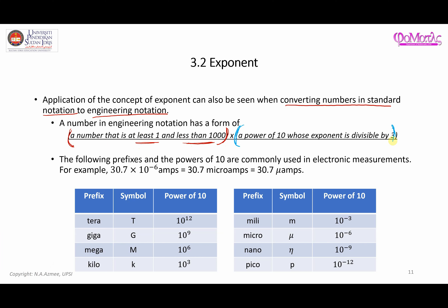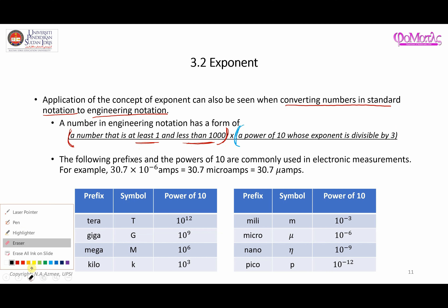The second component is a power of 10 where the exponent must be divisible by three. For example, 12 can be divided by 3, as can 9, 6, and 3. So we have to make sure that the power of 10 has an exponent which is divisible by 3. That is the idea of a number in engineering notation.